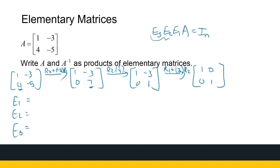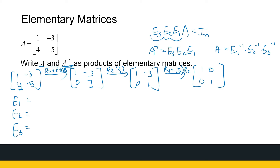From there, we can say that A inverse is E3 times E2 times E1. So when asked to write A inverse as a product of elementary matrices, A inverse comes out first. Then A is E1 inverse times E2 inverse times E3 inverse. We know what our elementary row operations were, so we just need E1, E2, E3 and their inverses.